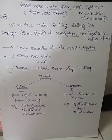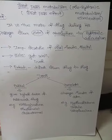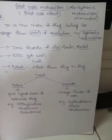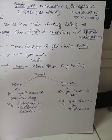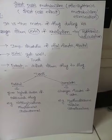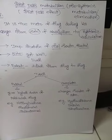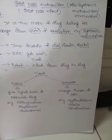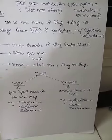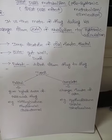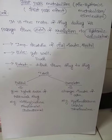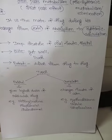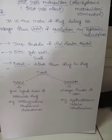First pass metabolism can occur at various sites: it can occur in the gut wall and also in the liver before the drug reaches systemic circulation. The extent of first pass metabolism differs from drug to drug and person to person.